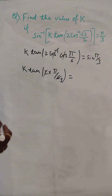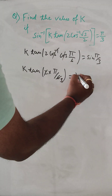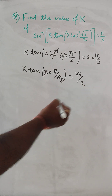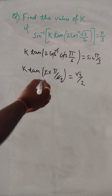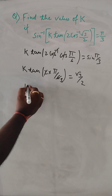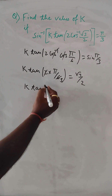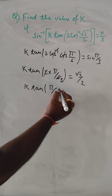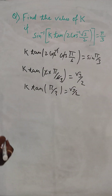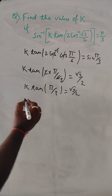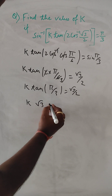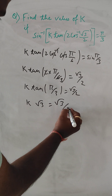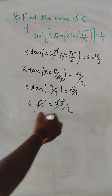So sin of pi by 3, which is 60 degrees, is under root 3 by 2. Now tan of pi by 3 — that's 60 degrees — is under root 3. So these under root 3 by 2 terms cancel.